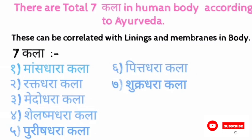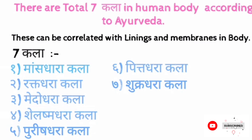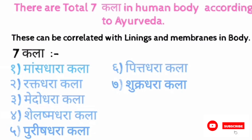There are seven kalas explained in the Samhita: 1. Maas dharkala, 2. Rek dharkala, 3. Medo dharkala, 4. Shlesham dharkala, 5. Purish dharkala, 6. Pitta dharkala, 7. Shukra dharkala.